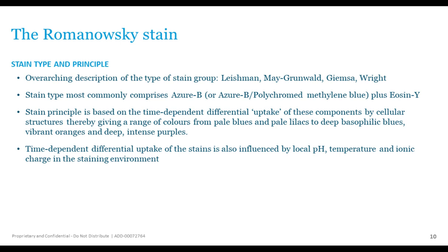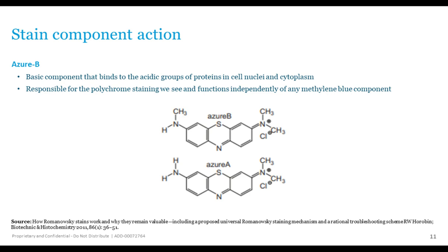Azure B is the basic component of the stain that binds to acidic proteins in the cell nucleus and cytoplasm. It is responsible for the polychrome — the multitude of colors — in our final slide. Azure B gives us nice blue colors. Looking at immature cells, we see vivid blue cytoplasm, nice purple and mauve nuclei, and clear nucleoli within the nucleus.